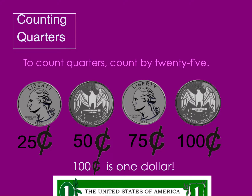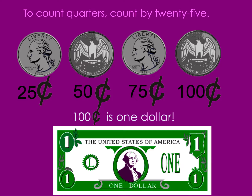When we count quarters, we count by twenty-five, as quarters are worth twenty-five cents. Let's count together. Twenty-five, fifty, seventy-five, one hundred. One hundred cents is equal to one dollar. Funny enough, George Washington is on the quarter and on the dollar bill. One hundred cents equals one dollar.